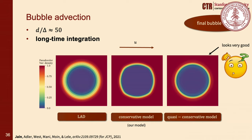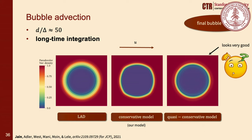For bubble advection at 50 grid points across the diameter, the LAD case shows some diffusion due to lack of sharpening, and there is small interface distortion with our conservative model, while the quasi-conservative model looks very good. However, at coarse resolution of 5 grid points across the diameter — more realistic for atomization simulations — repeating the same test, the bubble is completely lost with the quasi-conservative model, which is not acceptable.